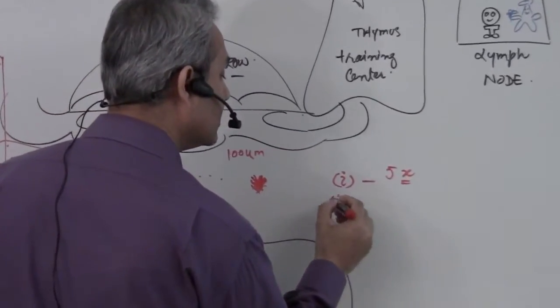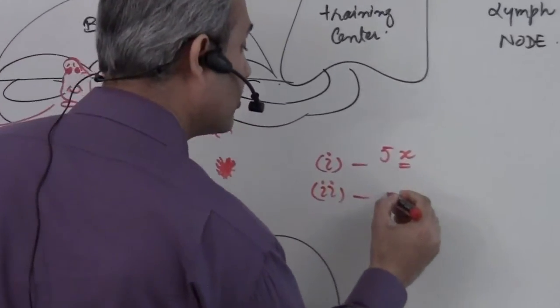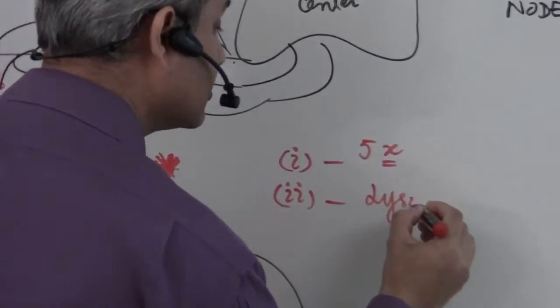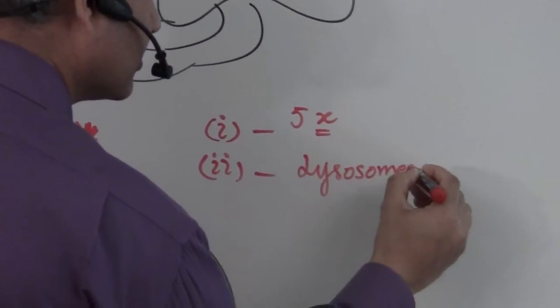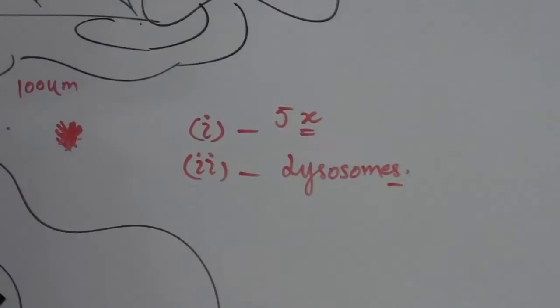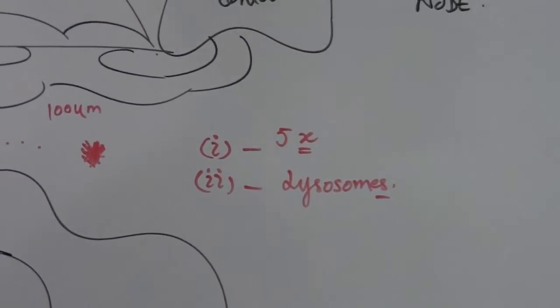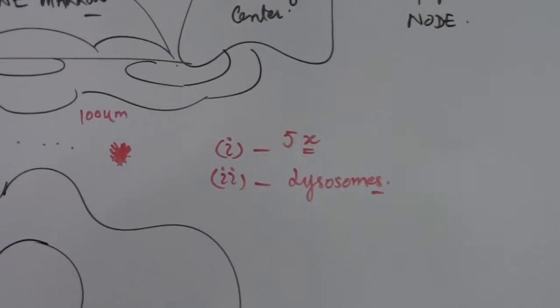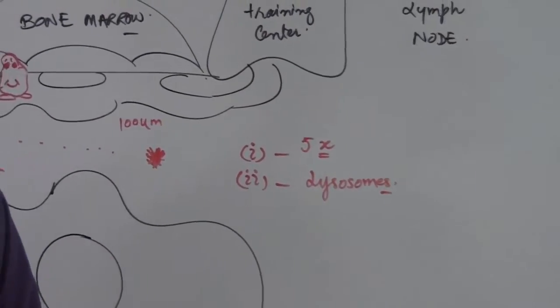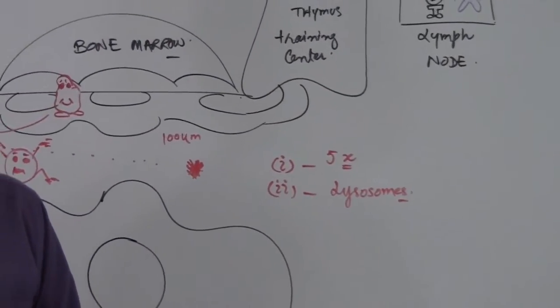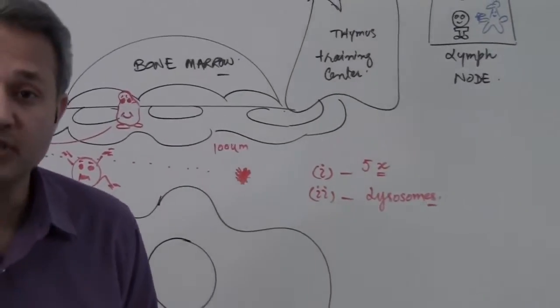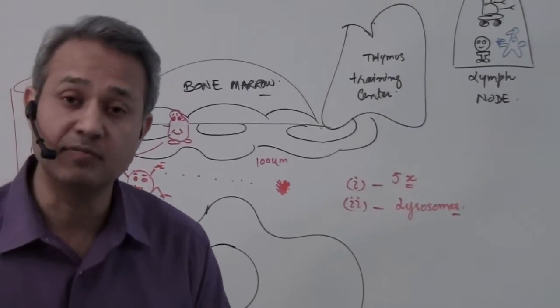And number two, it is going to mature its lysosomes. So a monocyte, which enters the tissue, will not become active right away. It is an immature cell. It is a cell which is not fully grown up yet. It's a baby cell. It's a baby monster.